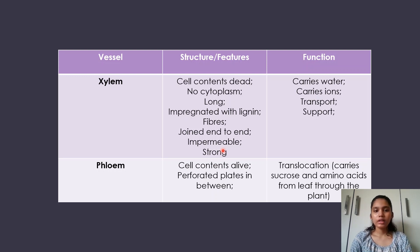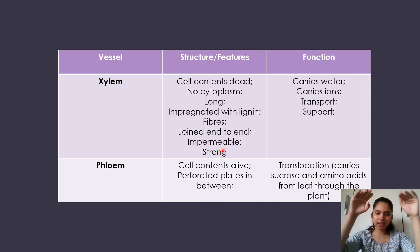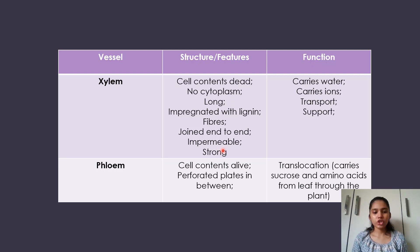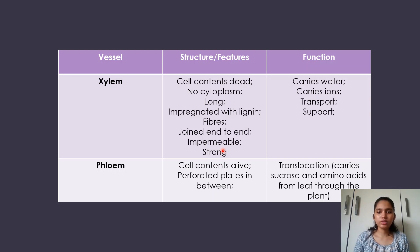In the phloem, the cell contents are alive but the cells lose their nuclei. There are perforated plates between each segment in the phloem called sieve plates, which allow the passage of sucrose and amino acids from one segment to another. The phloem is used in translocation, where it carries sucrose and amino acids from the leaf through the plant.